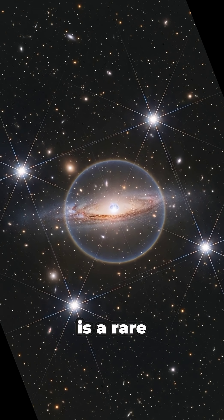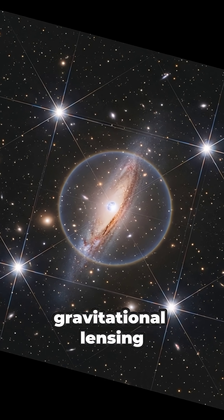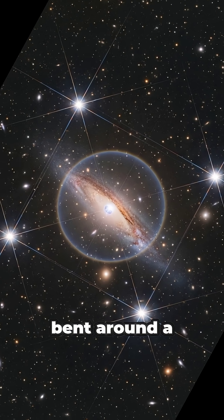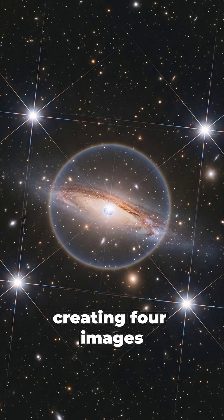An Einstein cross is a rare cosmic trick of gravitational lensing. Light from a distant galaxy is bent around a foreground galaxy, creating four images.